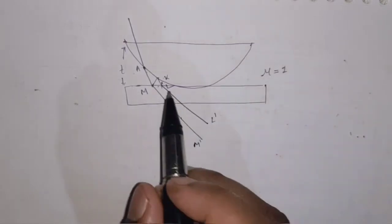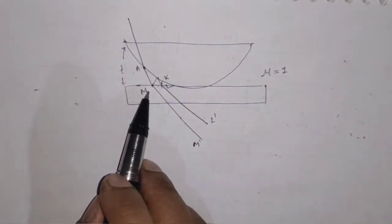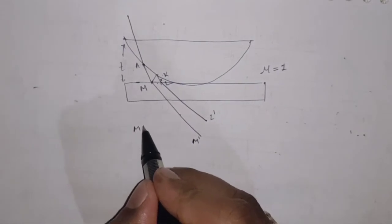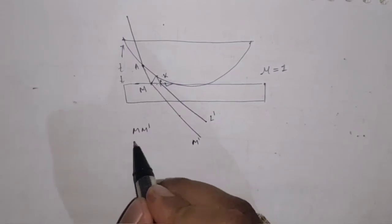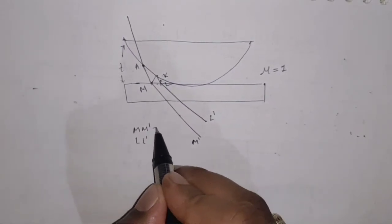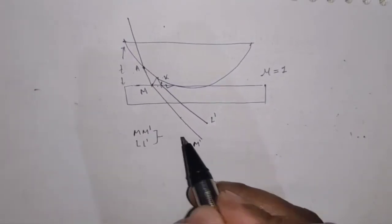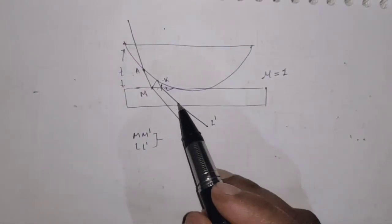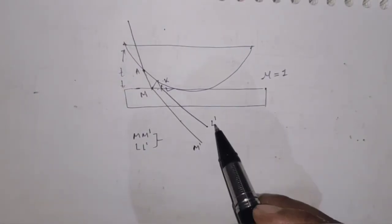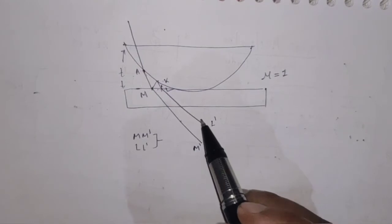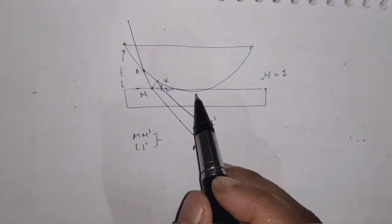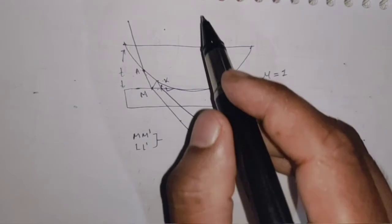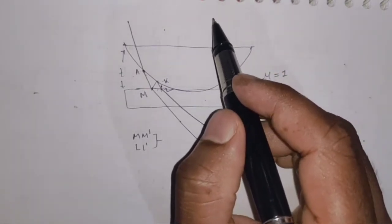There are two transmitted light waves: MM dash and LL dash. These transmitted light waves interfere with each other and form Newton rings, which we are going to observe in the microscope.